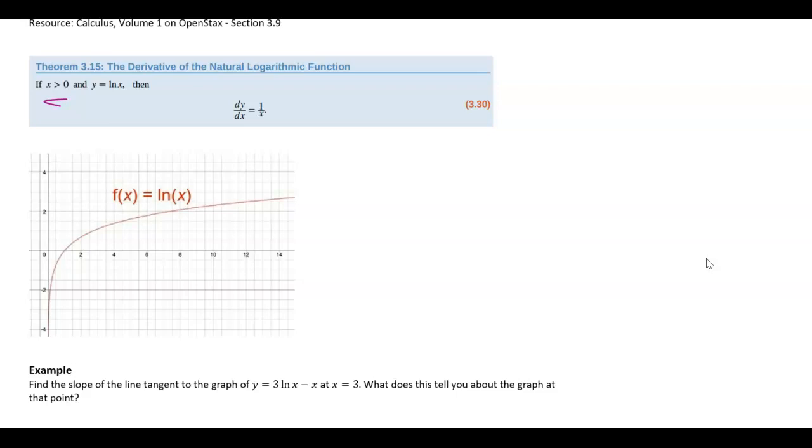So it does kind of make sense that here at 1, I have a slope of about 1, like that makes sense. And then as x gets bigger, my slopes kind of trend to 0.